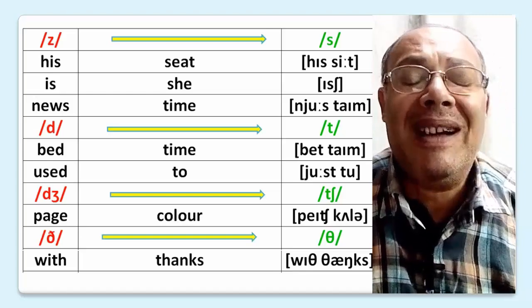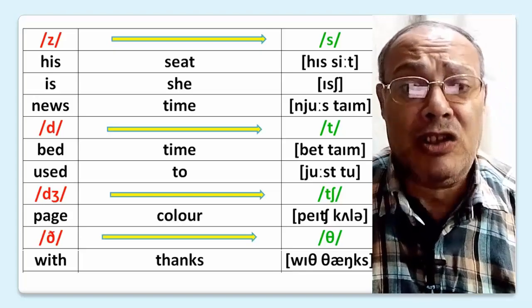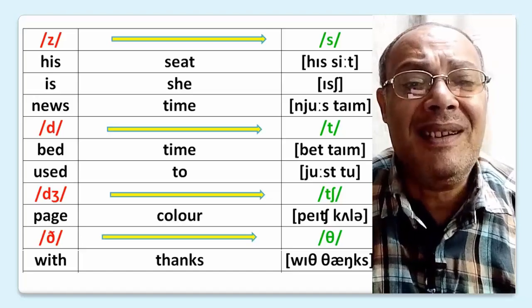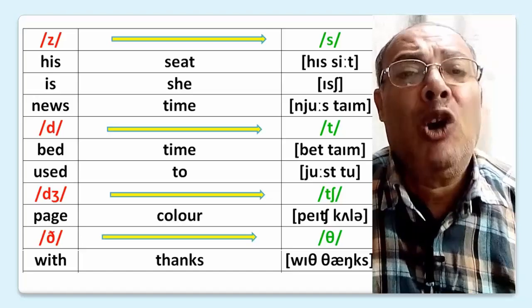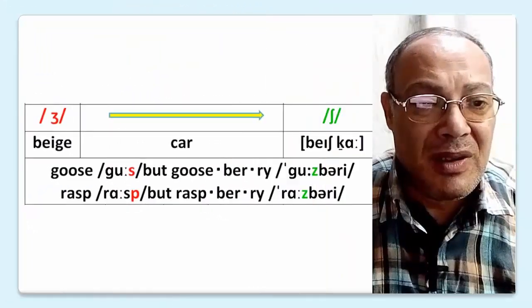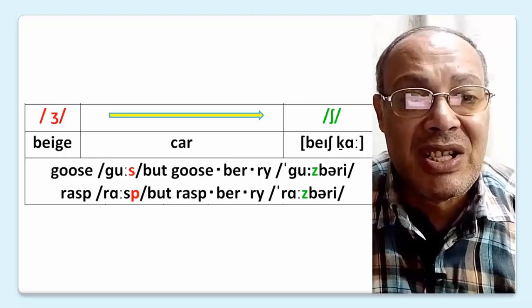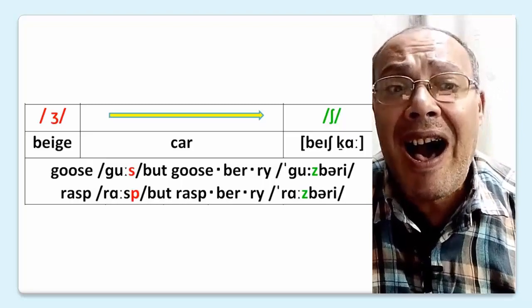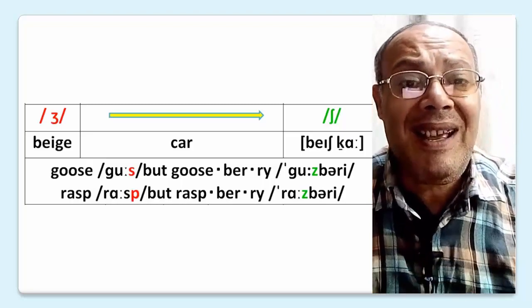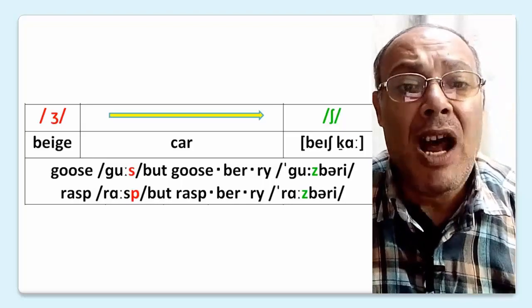J becomes CH — 'bedch color'. Z becomes F — 'we thanks'. Z becomes SH — 'bedch color'. Goose but gooseberry. Rasp but raspberry.